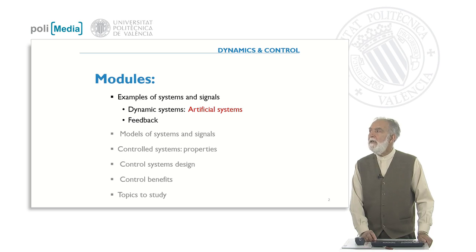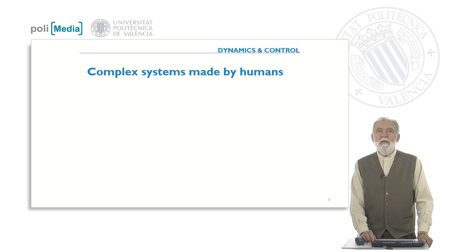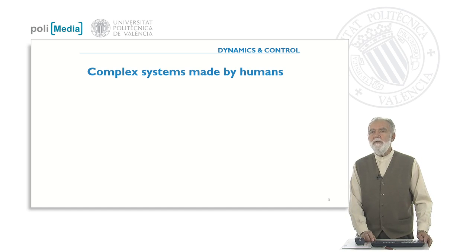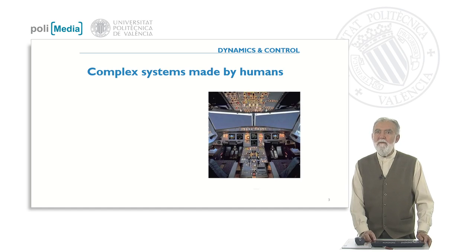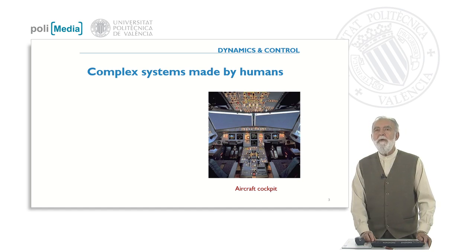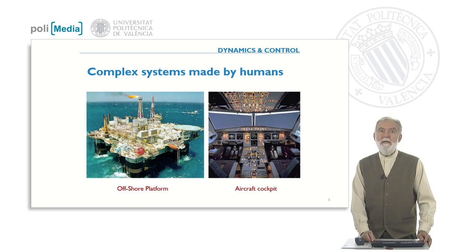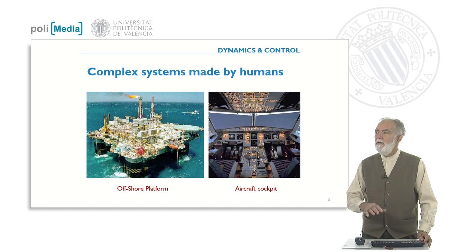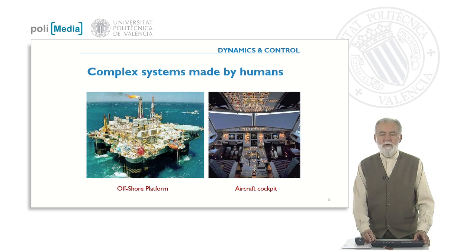Today we are dealing with human-made systems. Systems made by humans can be very simple, like an electric circuit, a watch, or a mobile phone, but they could also be very complex, like controlling an aircraft. You can see here the aircraft cockpit and how many instruments and how much information the pilot must consider to maneuver the aircraft. If we consider an offshore platform, we realize there are many subsystems and components that must all be coordinated, controlled, and kept in balance.